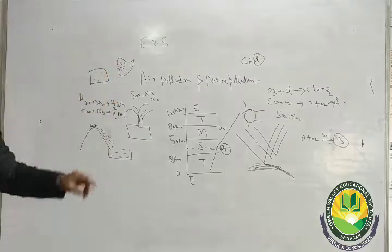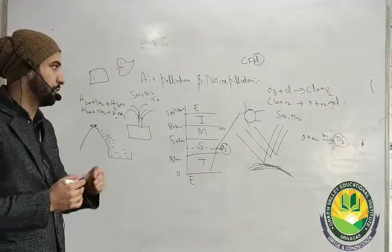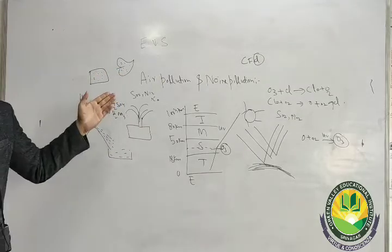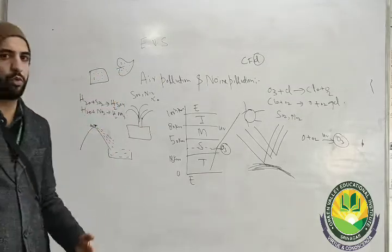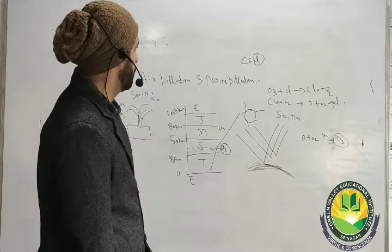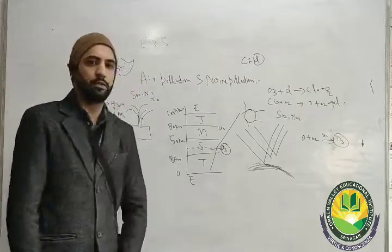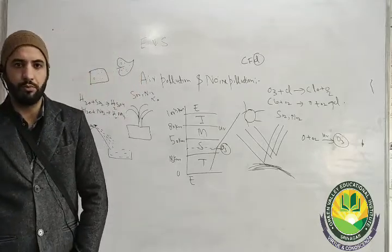When the photosynthesis rate lowers, the rate of growth in plants also lowers. So these are some of the consequences of air pollution.